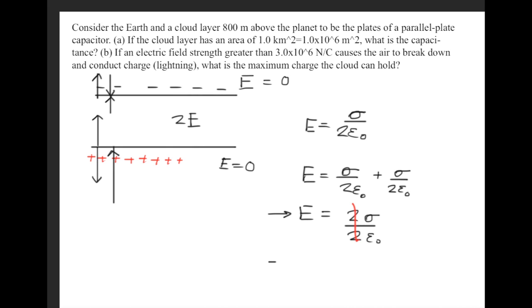Now the 2s cancel, and for a capacitor, which is with two parallel plates, we get that the E-field is sigma over epsilon naught.